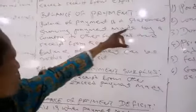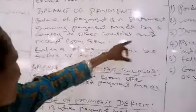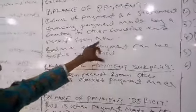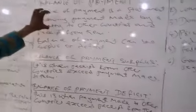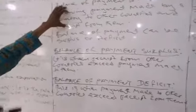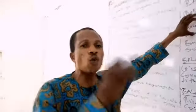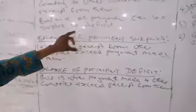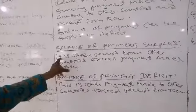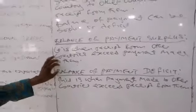Let's look at balance of payment. Balance of payment is a statement showing payments made by a country to other countries and received from them. Balance of payment can be surplus or deficit. Balance of payment surplus is when the money you are receiving from other countries is more than what you are paying to them — in that case, the balance of payment is a surplus.